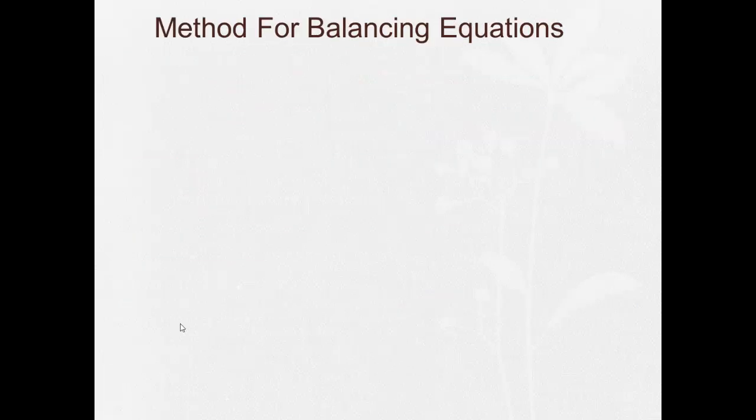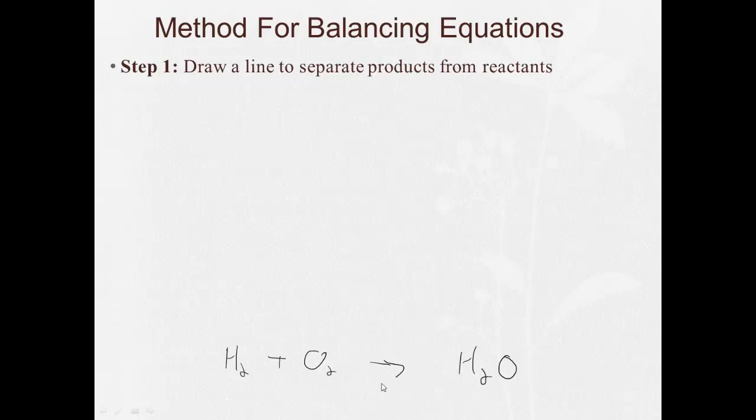So there's going to be a bunch of steps, and initially we're going to go through these steps and rules. But as we get into the process of balancing equations, you'll see that it's a lot easier than these steps make it seem. So step one, draw a line to separate products from reactants. So if we do down here, I have H2, I'm going to leave out the gas and the liquid stuff, plus O2 yields H2O. So I'll just draw a little line here to separate the products from reactants.